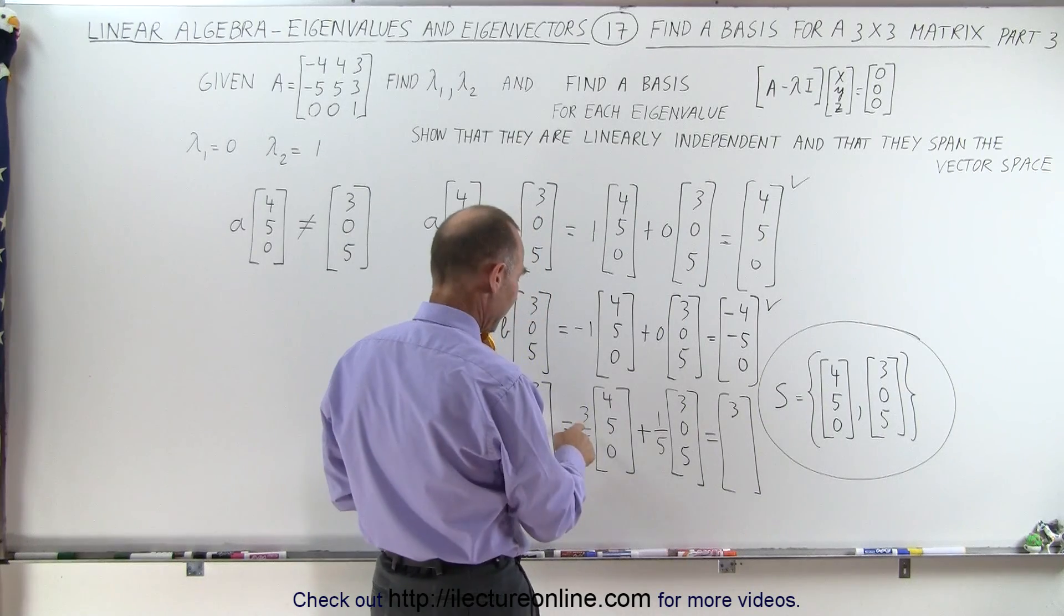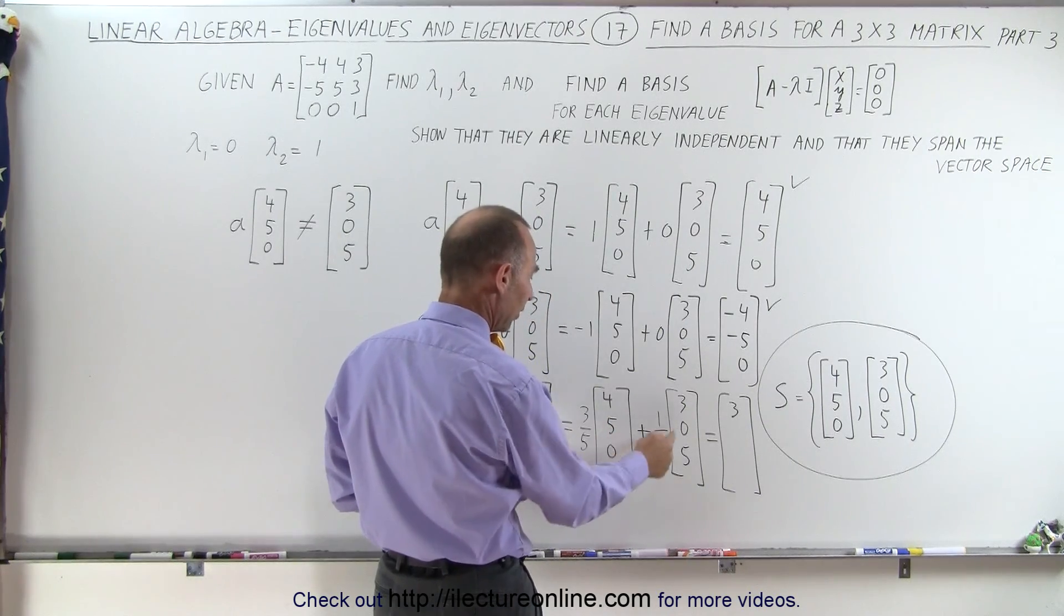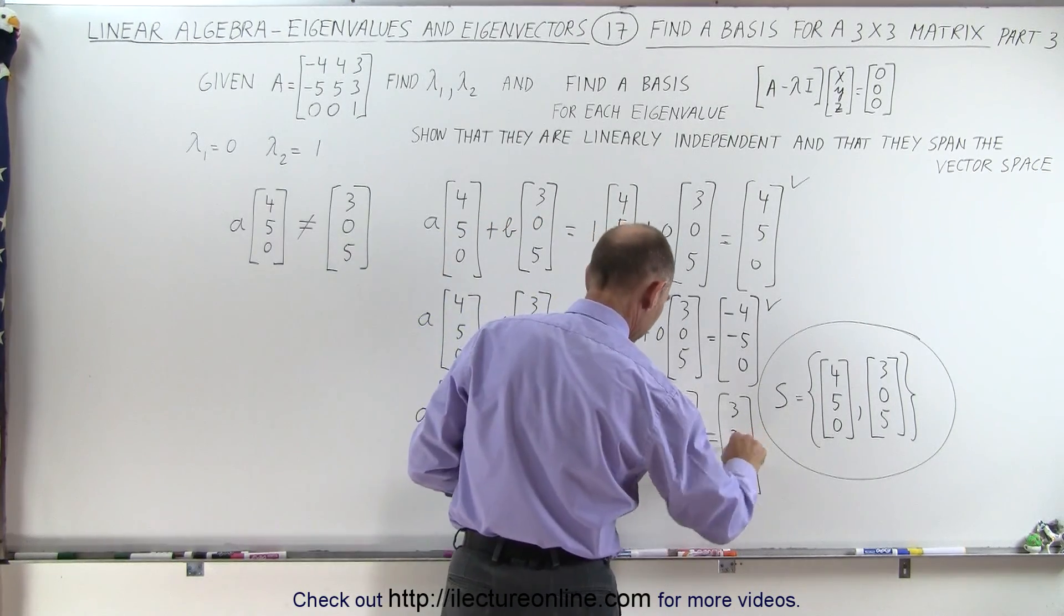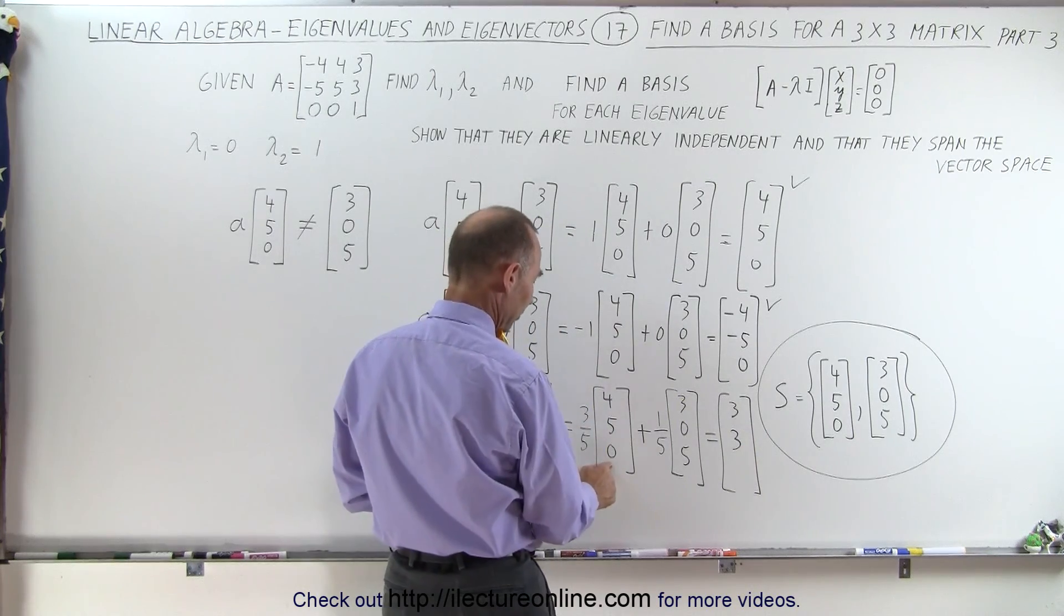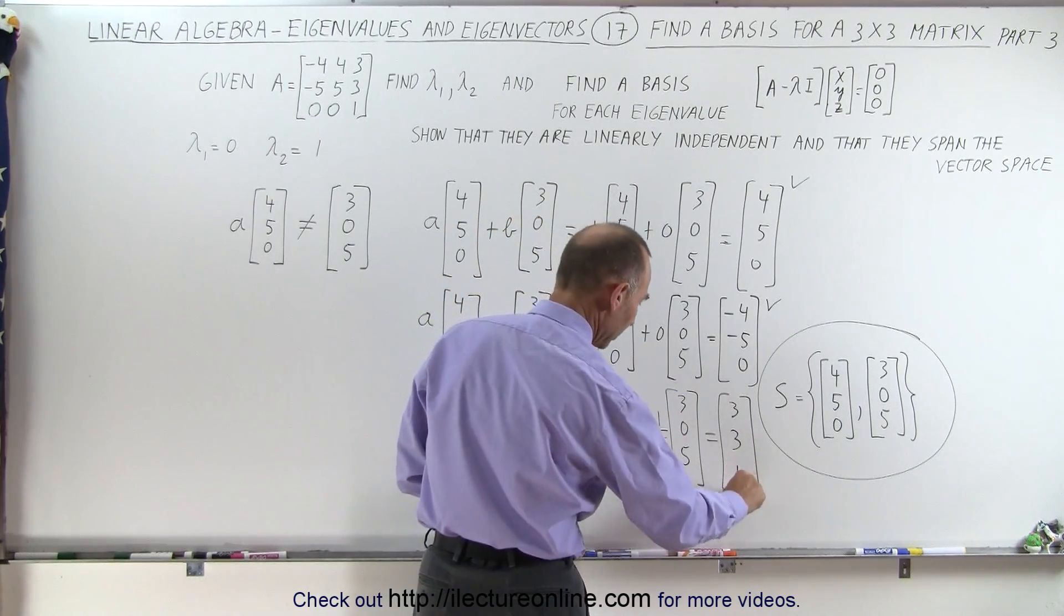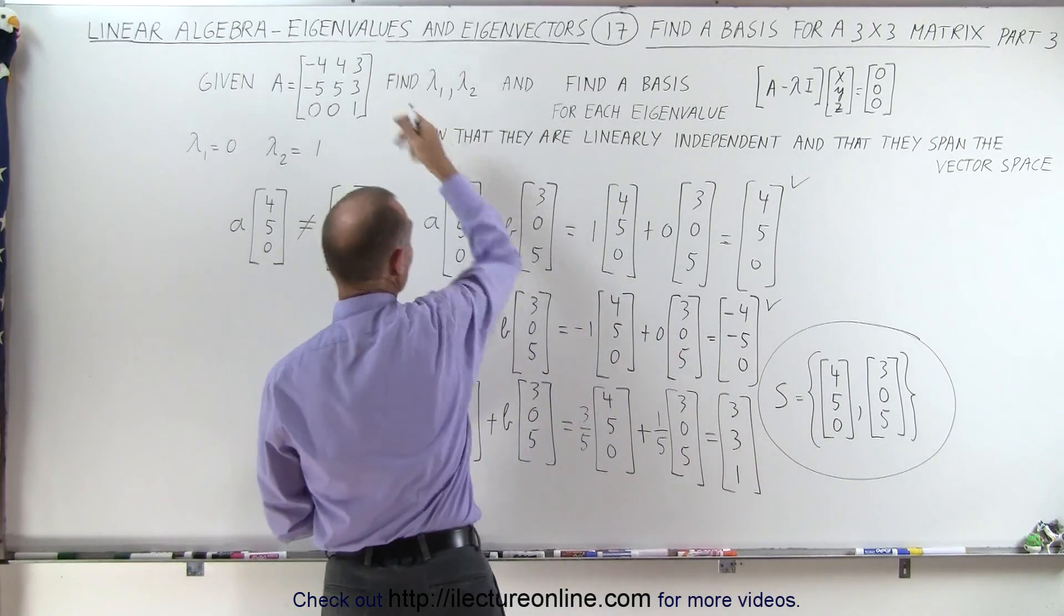Second, I have 3/5 times 5 is 3 plus 0 gives me 3. And 3/5 times 0 is 0 plus 1/5 times 5 is 1 gives me 1. And sure enough, that gives me [3, 3, 1].